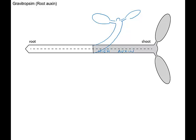Now in the root there is also a redistribution of auxin. We get high auxin again in the low part of the root, but interestingly that has the opposite effect on the cells, and so the cells on the bottom elongate more slowly.